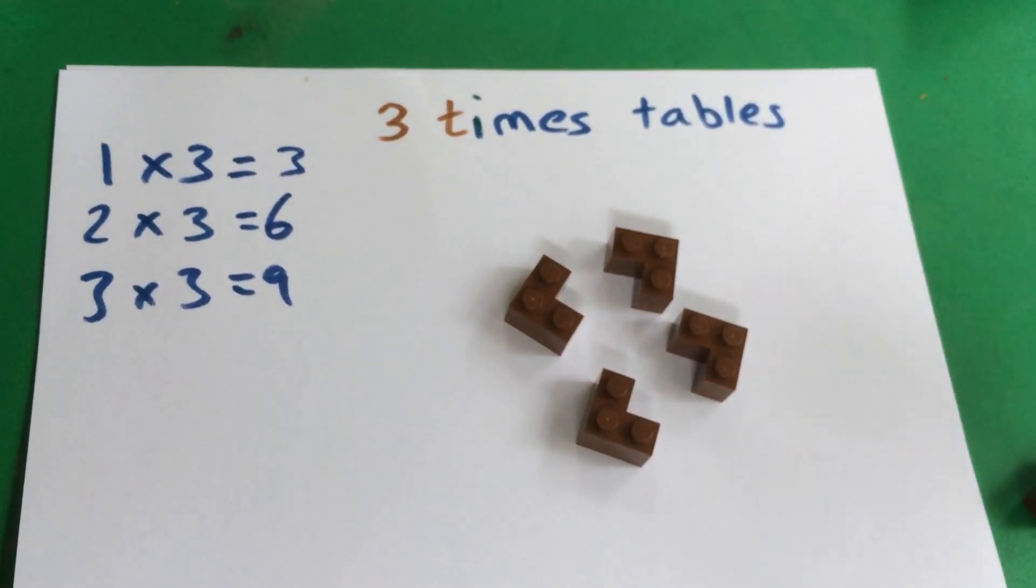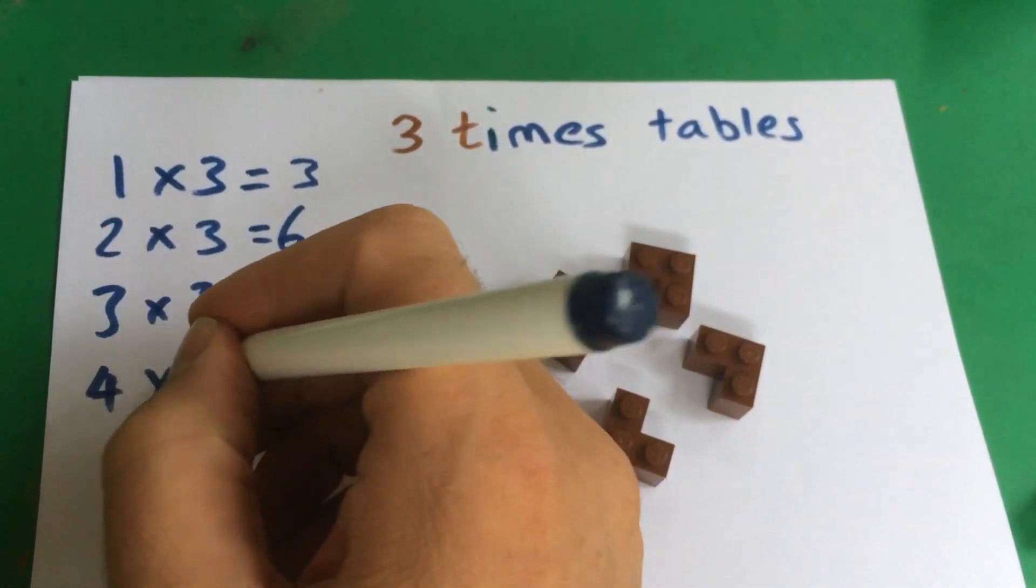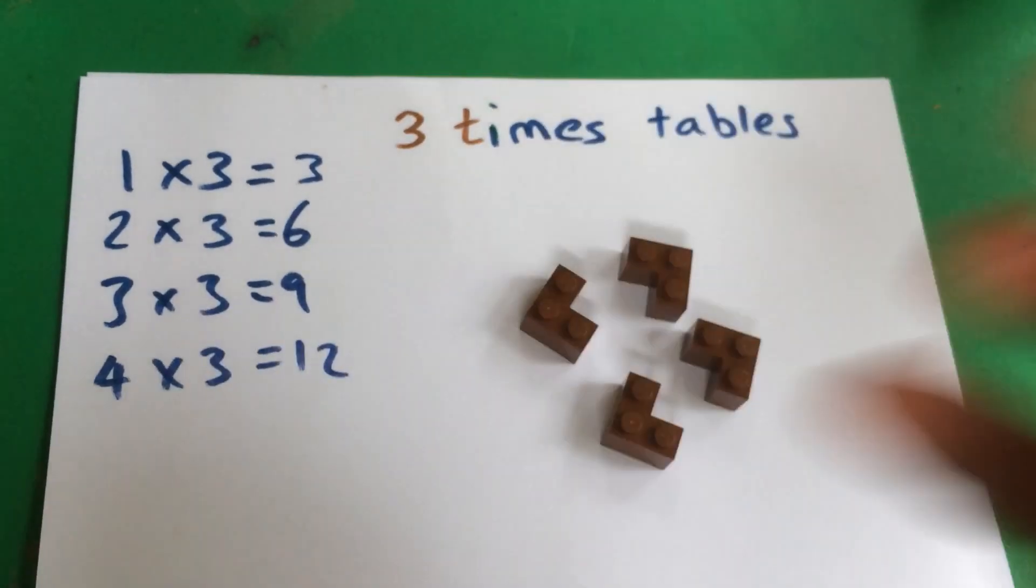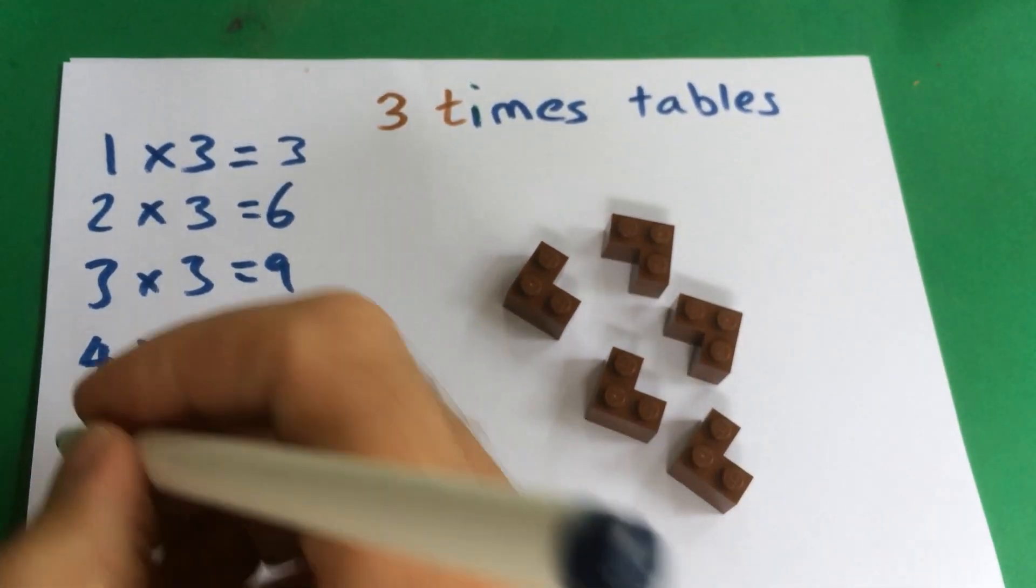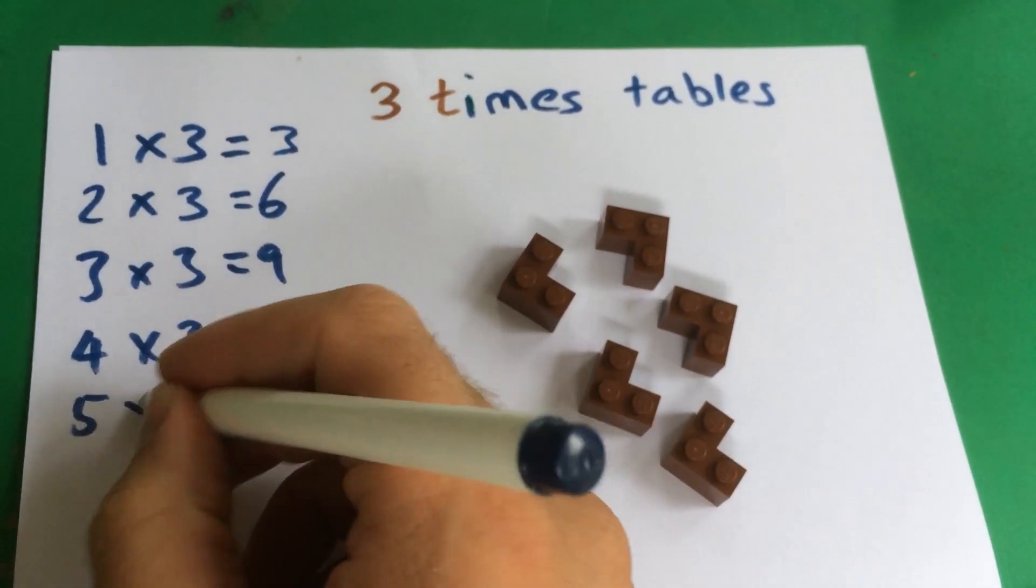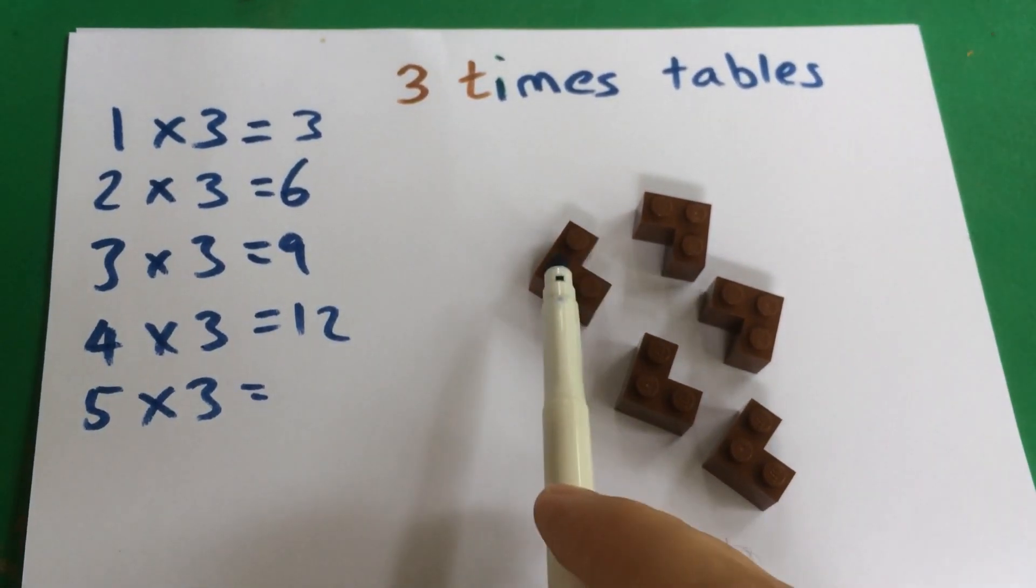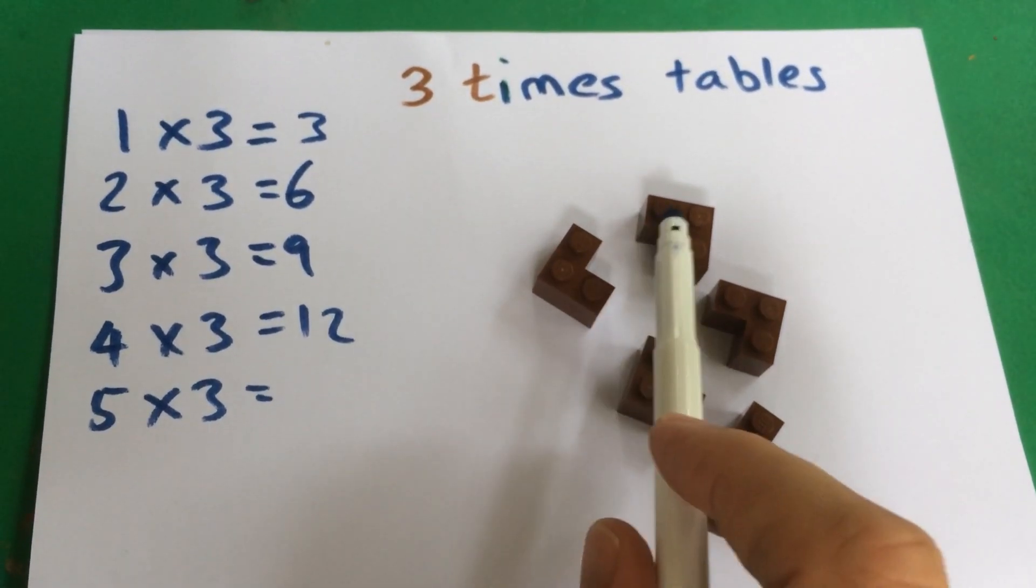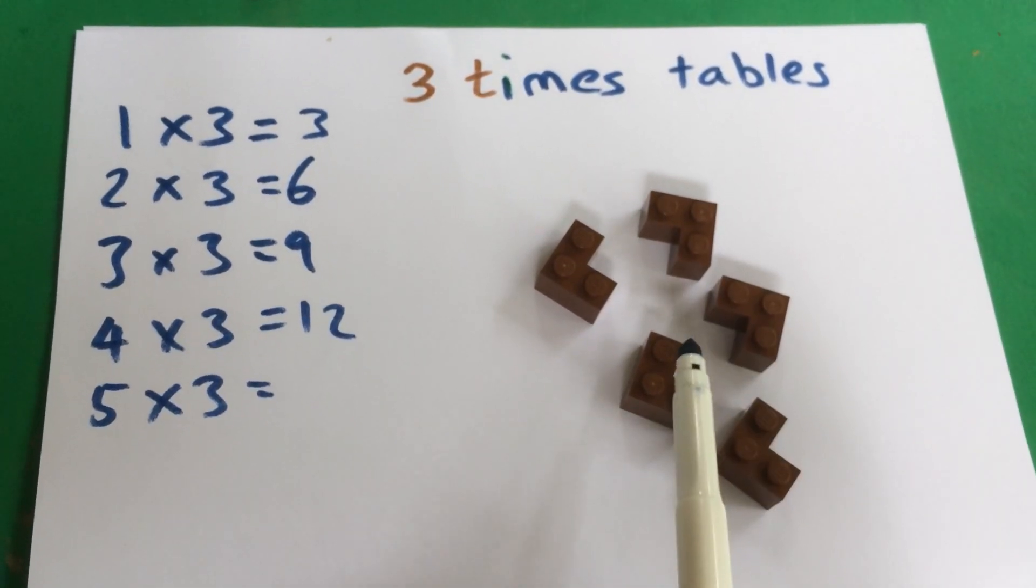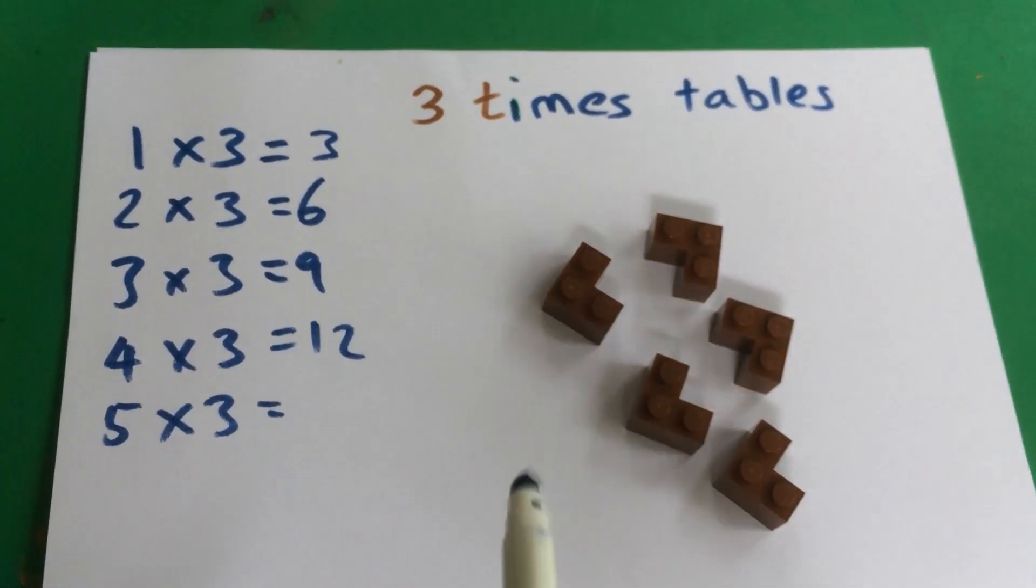Four lots of three. We've got twelve. Five lots of three. Do you want to add up the little dots? Five. Five. Count them up. Fifteen. Fifteen.